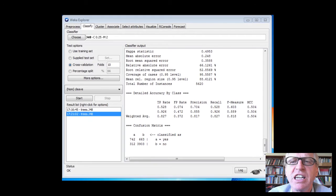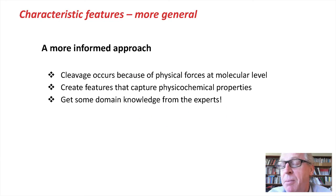Well, we might look for a different set of features that capture the more general properties of signal peptides. So a more informed approach, which we might learn about by consulting an expert, a biologist, is we assume that the cleavage occurs because of physical forces at the molecular level. That is, amino acids have electrochemical properties. So we might create features that capture those physical chemical properties of amino acids around the cleavage site or of the signal peptide as a whole. So we can get some domain knowledge from the experts.